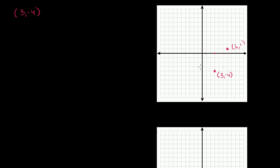In the last video, we figured out that we could just use the Pythagorean theorem if we wanted to figure out the distance between these two points. We just drew a triangle there and realized that this was the hypotenuse. In this video, we're going to try to figure out what is the coordinate of the point that is exactly halfway between this point and that point. Now what is the coordinate of the point that is exactly halfway in between the two? It seems like a really tough problem at first.